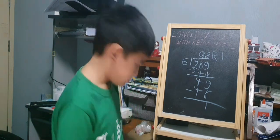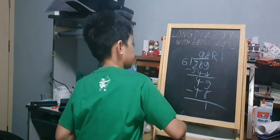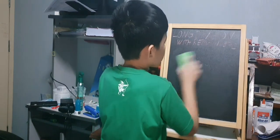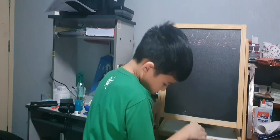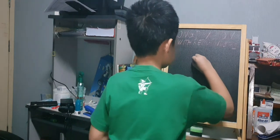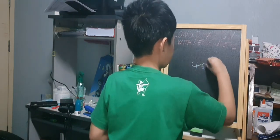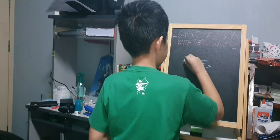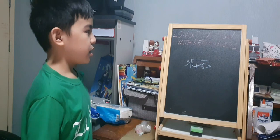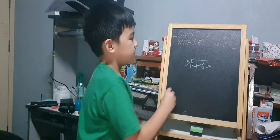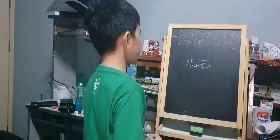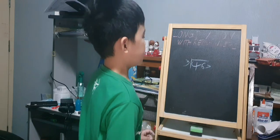I have another example: 467 divided by 3. Again, 3 is the divisor and 467 is the dividend. The first thing we will do is divide.